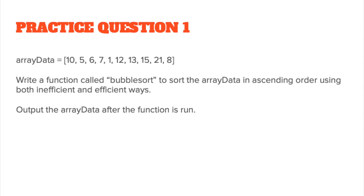Practice question one: you've got an array called data with a set of values — make sure the values are the same. Write a function called bubble sort to sort the array data in ascending order using both the inefficient and efficient ways, then print the array data after the function is run. Pause the video, have a go, and then continue.